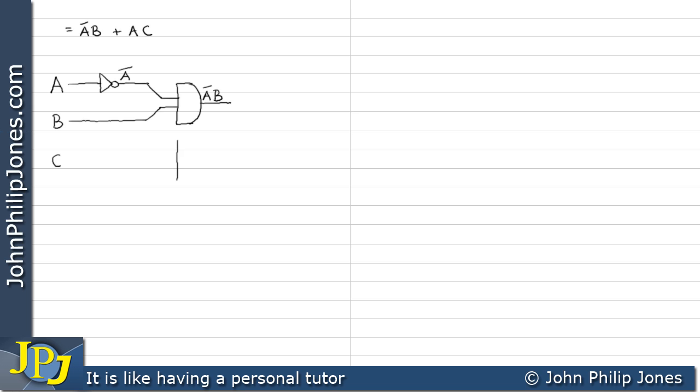And then we draw another AND gate because we need to produce the other min term which we can see is A and C. Which means taking a tap off the A, taking that into the gate and also taking the C. We then put both of the output from the AND gate to the input of an OR gate and that will give us F here.